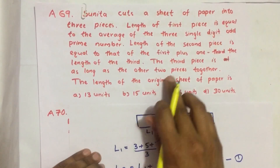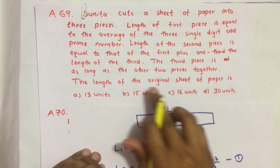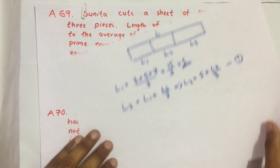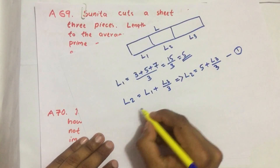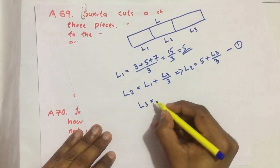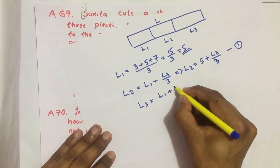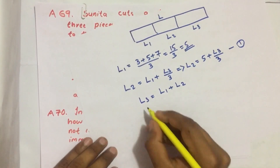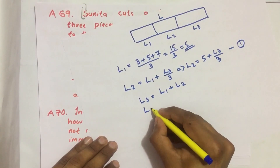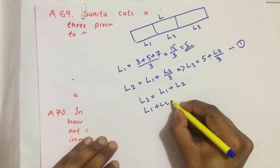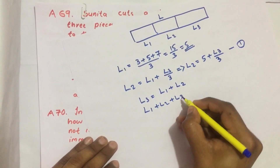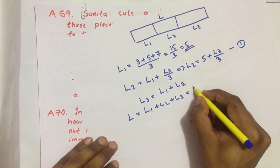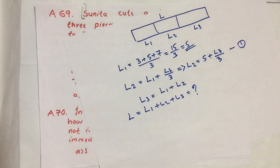The length of the third piece is as long as the other two pieces together, so L3 = L1 + L2. Finally, we are asked: what is L, where L = L1 + L2 + L3?